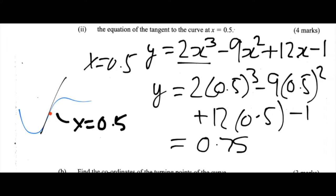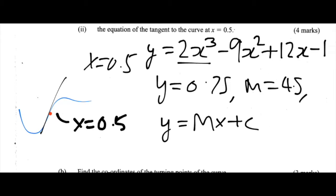So now we have our values for y, x and m, the gradient. Now we just need to find out what c, the y-axis intercept of the tangent, is. So let's rearrange y equals mx plus c to make c the subject. When we do that, we get c is equal to y minus mx.